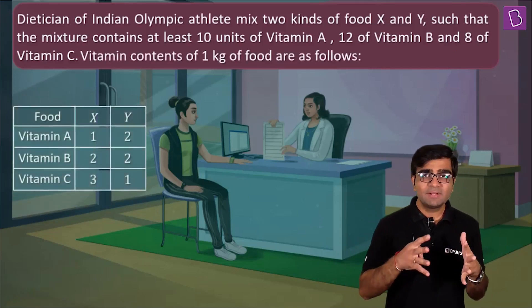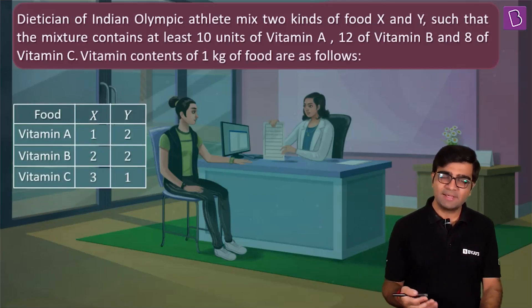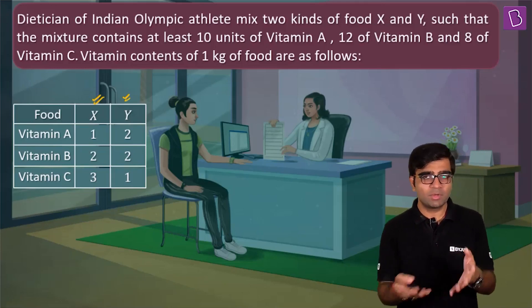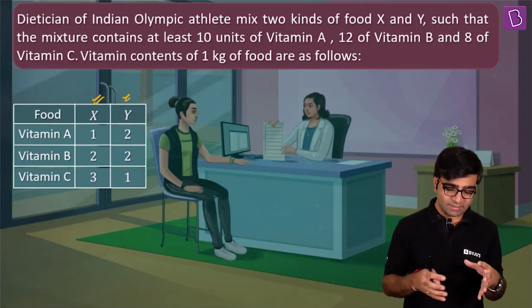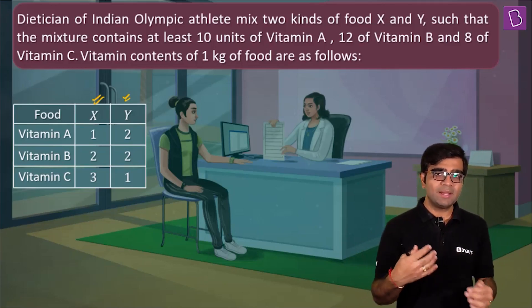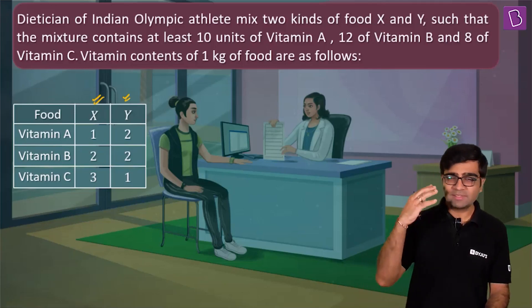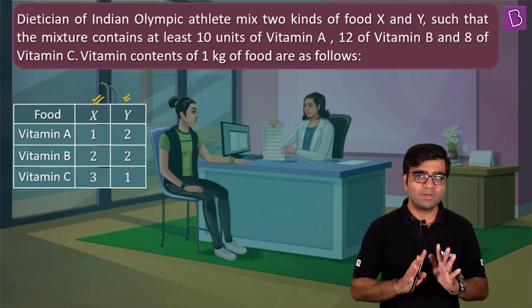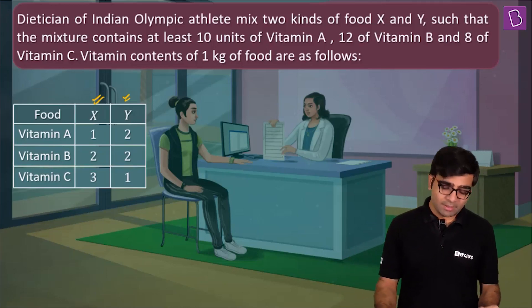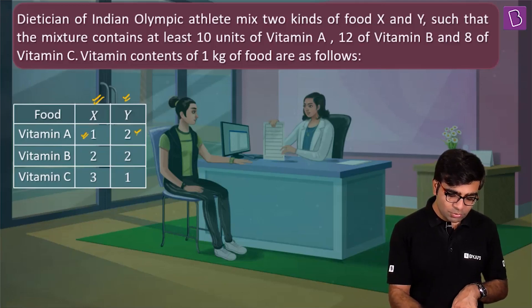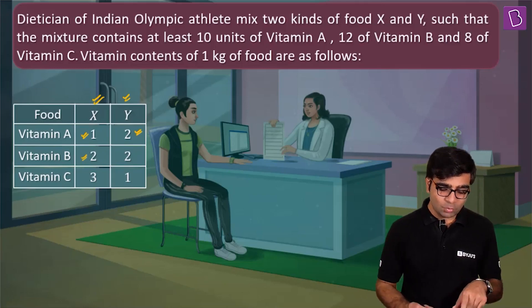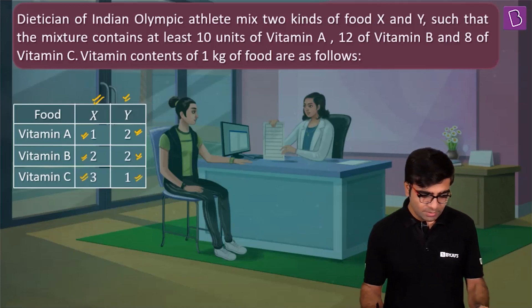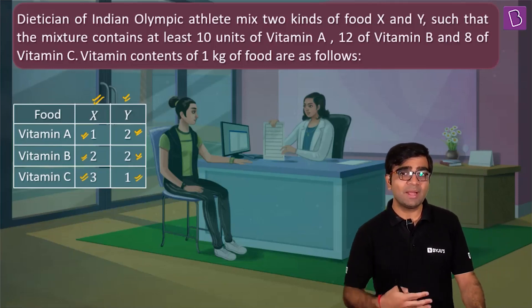They want at least 10 units of vitamin A, 12 units of vitamin B, and 8 units of vitamin C. There are only two types of food: x and y. On one side of the table we have food x and food y. We need some quantity of food x and food y such that the vitamin content is fulfilled. For vitamin A: one portion of x and two portions of y; for vitamin B: two portions of x and two portions of y; for vitamin C: three portions of x and one portion of y.